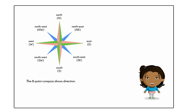Northwest refers to the position exactly between North and West. Finally, Southwest refers to the position exactly between South and West.